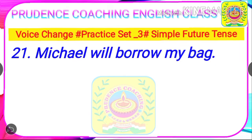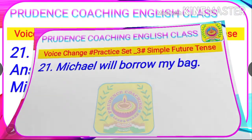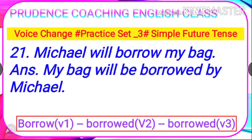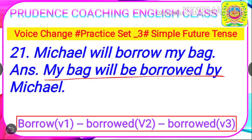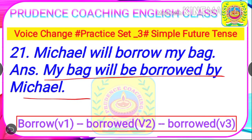Time is finished. The answer is: My bag will be borrowed by Michael. You know the transformation: V1 is borrow, V2 is borrowed, and V3 remains the same — borrowed.